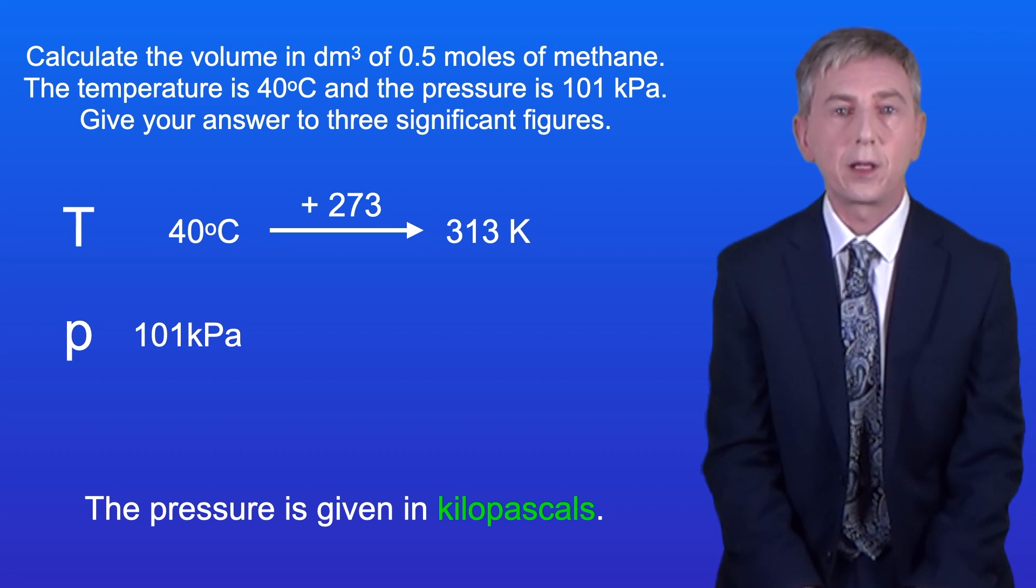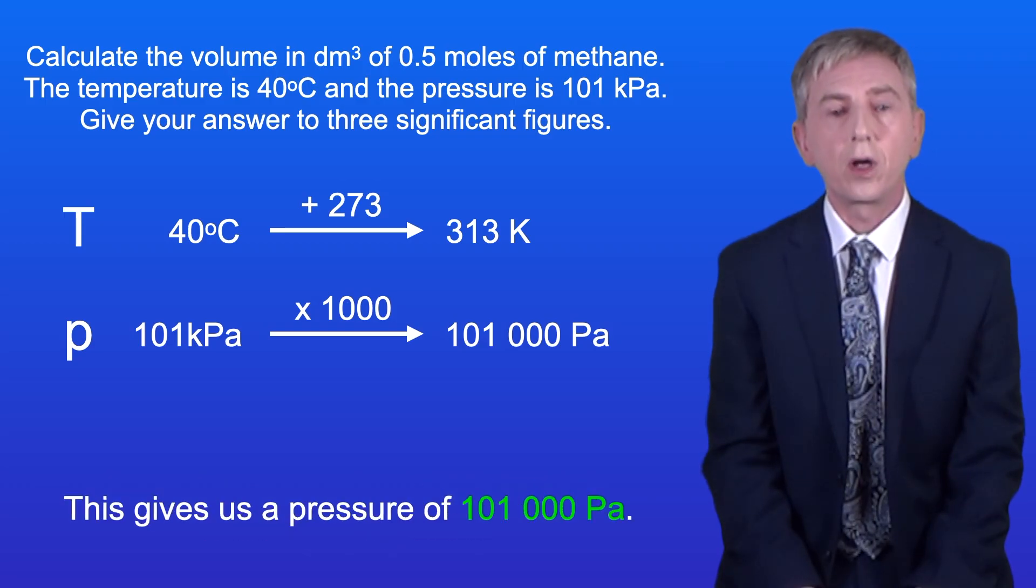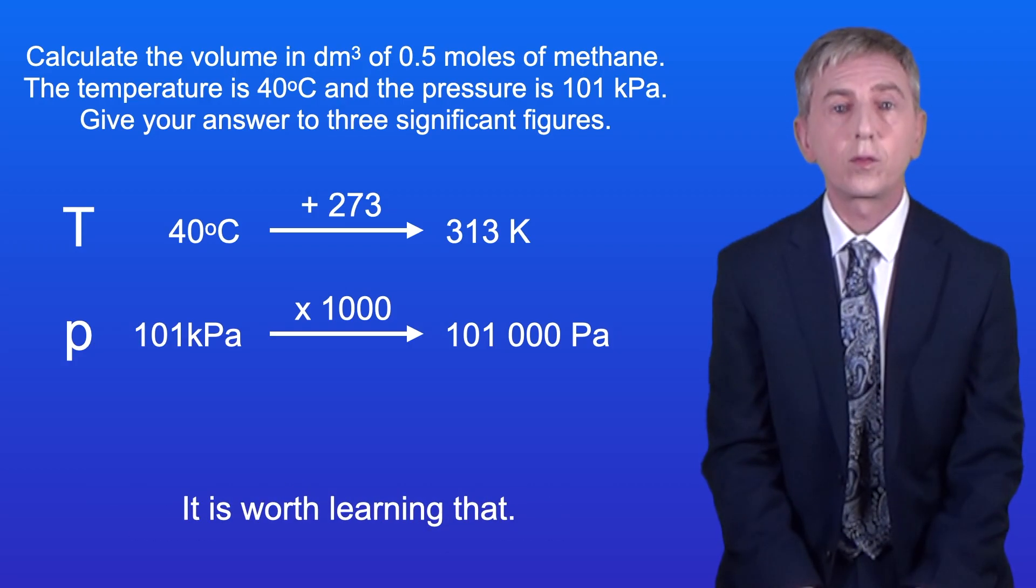The pressure is given in kilopascals so we need to convert this to pascals by multiplying by 1000. This gives us a pressure of 101,000 Pa. Now I should point out that 101,000 pascals is actually atmospheric pressure and it's worth learning that.